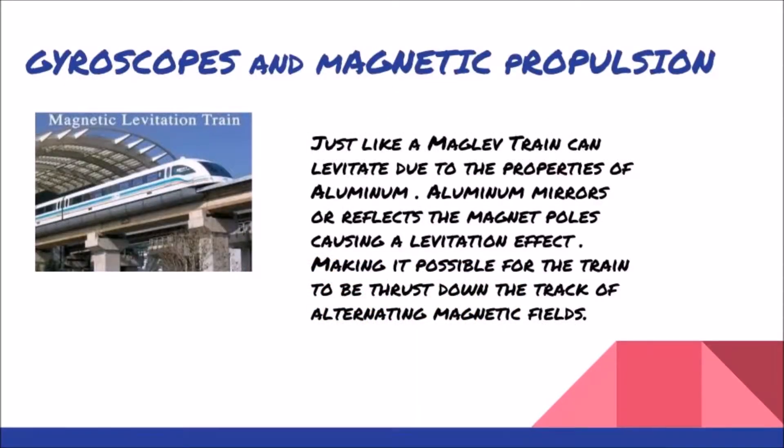Gyroscopes and magnetic propulsion: Let's make the connection. Just like a maglev train can levitate due to the properties of aluminum. Aluminum mirrors or reflects the magnetic pulse, causing a levitation effect, making it possible for the train to be thrust down the track of alternating magnetic fields.